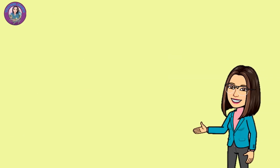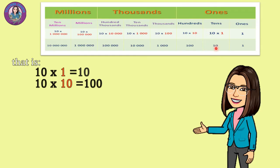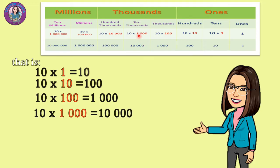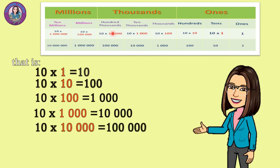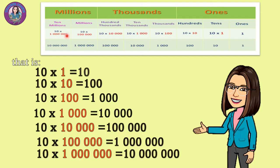For better understanding, let's have this example. 10 times 1 is 10. 10 times 10 is 100. 10 times 100 is 1,000. 10 times 1,000 is 10,000. 10 times 10,000 is 100,000. 10 times 100,000 is 1,000,000. And 10 times 1 million is 10 million. This shows that each place value is 10 times the value of the place next to its right.